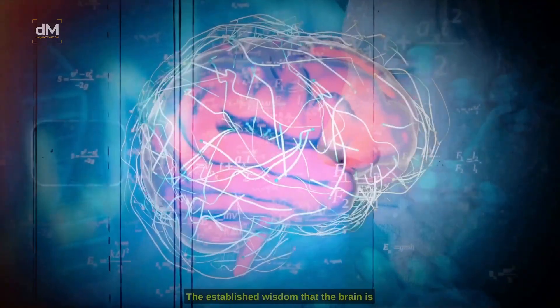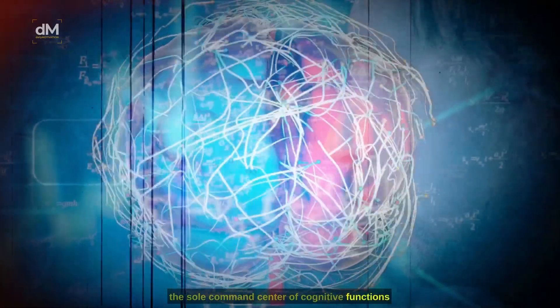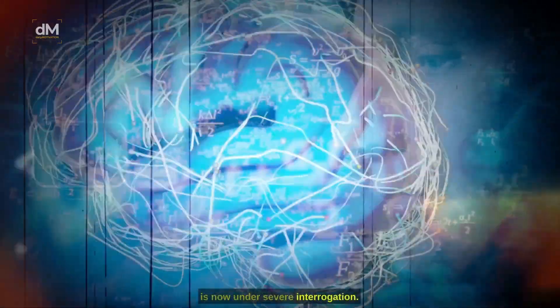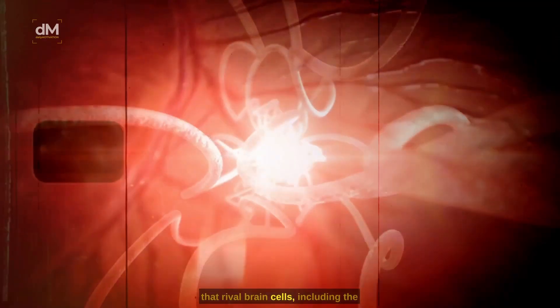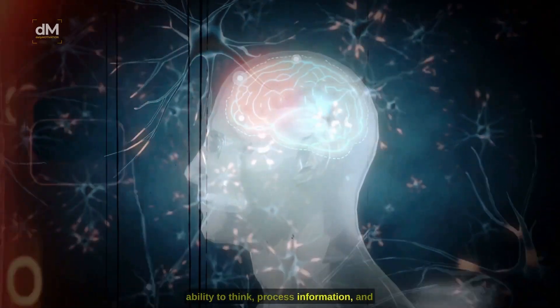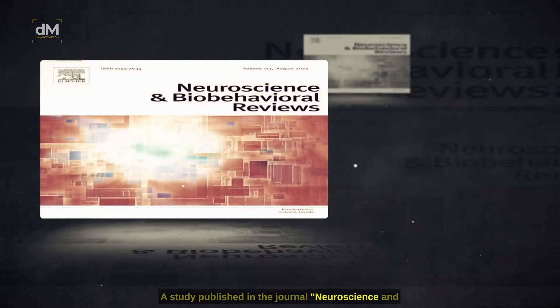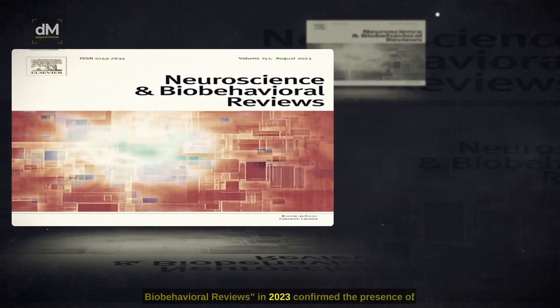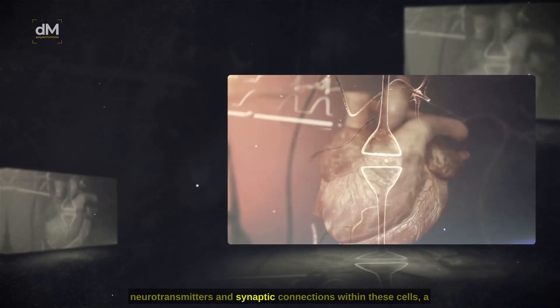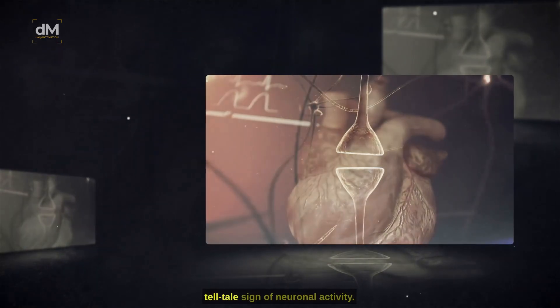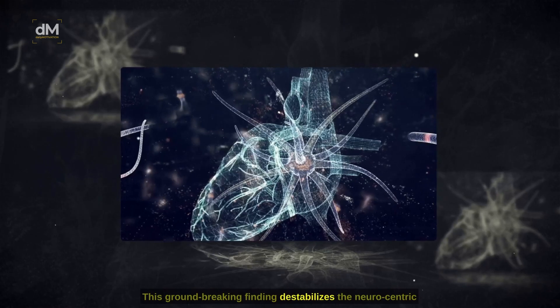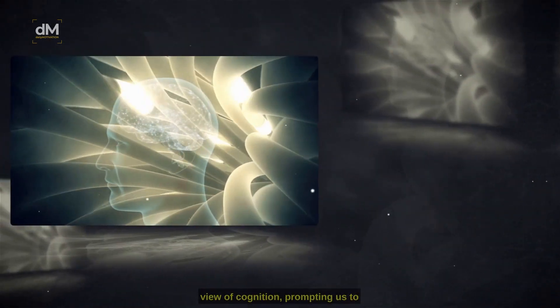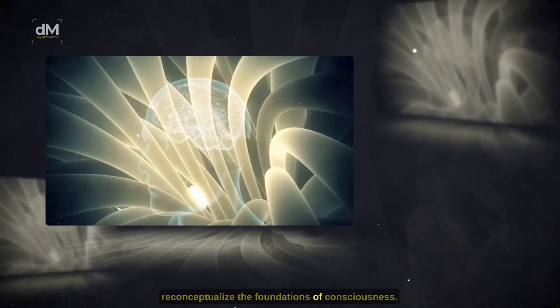The established wisdom that the brain is the sole command center of cognitive functions is now under severe interrogation. Sensory neuroites have demonstrated cognitive capacities that rival brain cells, including the ability to think, process information, and form memories independently. A study published in the journal Neuroscience and Biobehavioral Reviews in 2023 confirmed the presence of neurotransmitters and synaptic connections within these cells, a tell-tale sign of neuronal activity. This groundbreaking finding destabilizes the neurocentric view of cognition, prompting us to reconceptualize the foundations of consciousness.